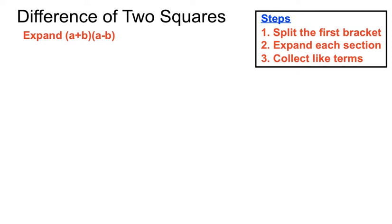We're looking to split the first bracket, expand each section and collect like terms just like we've been doing with binomial products. So let's have a look at what happens here. If we split the first bracket here and have a times (a minus b) and b times (a minus b), a special thing happens to the two middle terms.